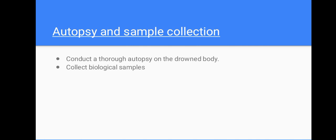Now let's look at autopsy and sample collection. Once the body is recovered, normal forensic procedures follow. When it comes to autopsy, an autopsy is conducted on the drowned body, then biological samples are collected. Some of these biological samples include lung tissues, bone marrow, as well as other potentially diatom-containing fluids. About five grams of marrow should be taken from the victim, placed in a nitric acid solution, and then placed in a furnace, allowing the release of diatoms.